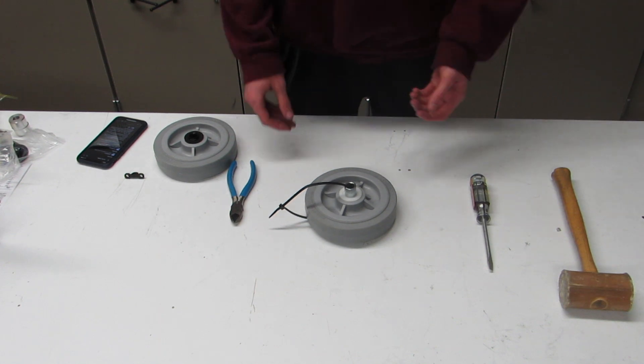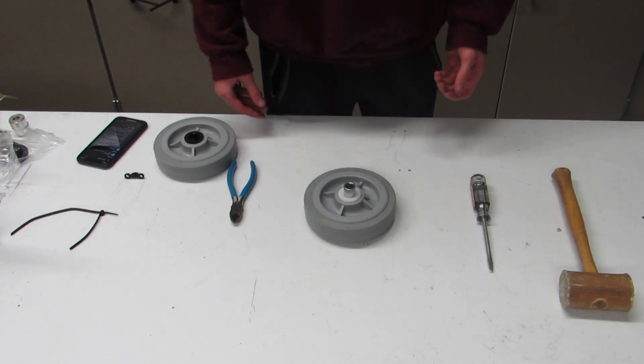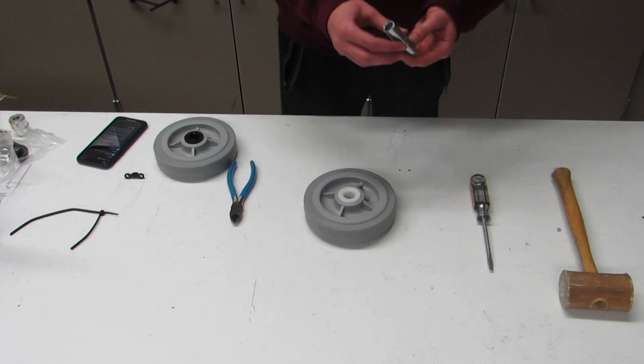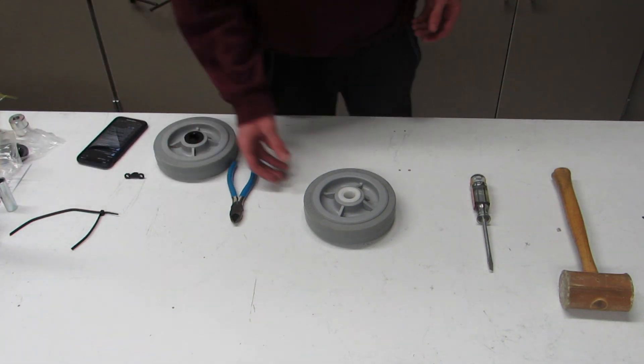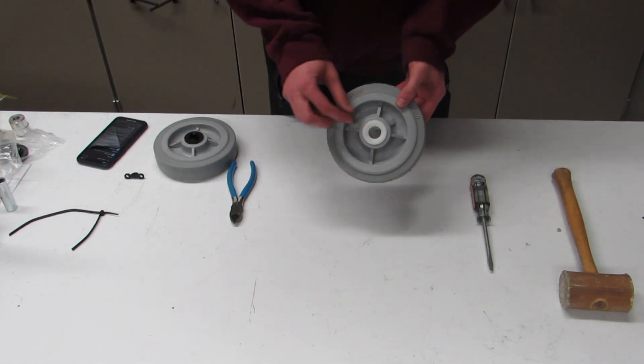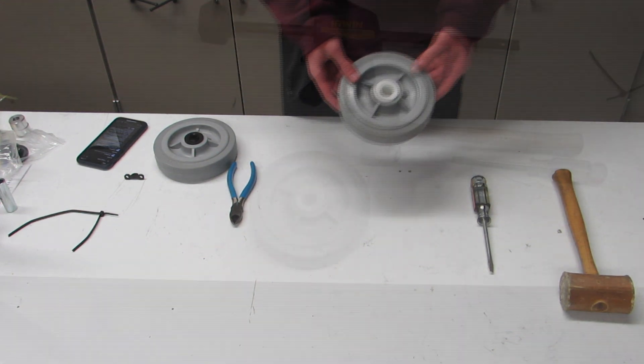To start working with our Colsons, remove the zip tie, which I already cut, and you can take this piece out. You won't be needing that. So as you can see, we have this plastic piece on the inside that we have to pop out.